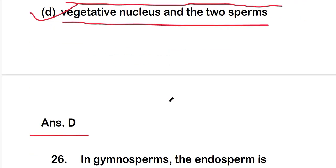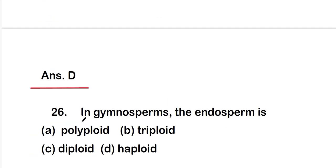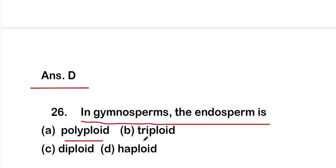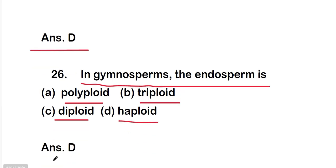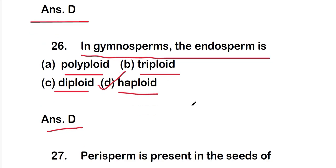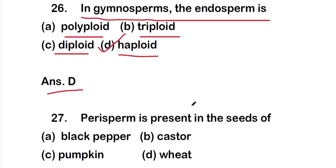Question 26: in gymnosperms the endosperm is option A: polyploid; option B: triploid; option C: diploid; or option D: haploid. The correct answer is option D — in gymnosperms the endosperm is haploid.